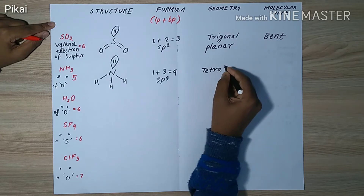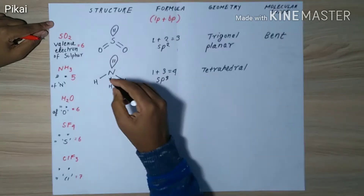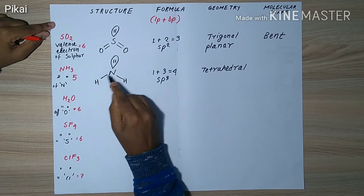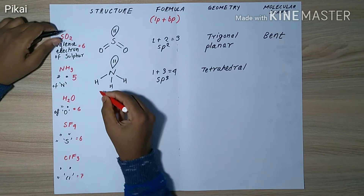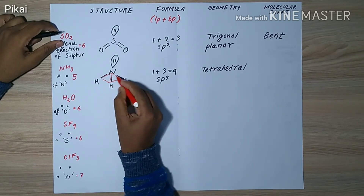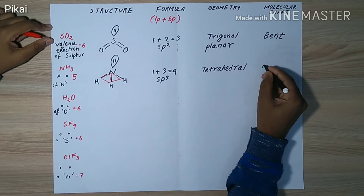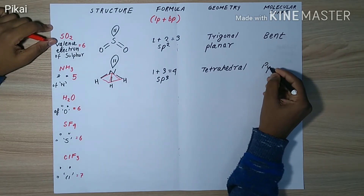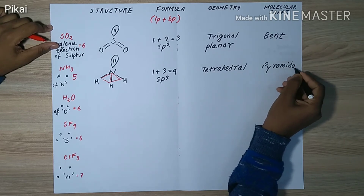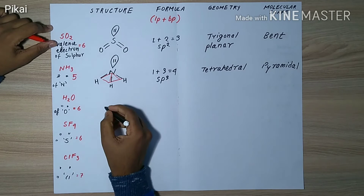These four denote one s and three p orbitals, giving sp3 hybridization. sp3 hybridization denotes tetrahedral geometry. If we don't consider the lone pair, the remaining structure is pyramidal, so the molecular shape of NH₃ is pyramidal.